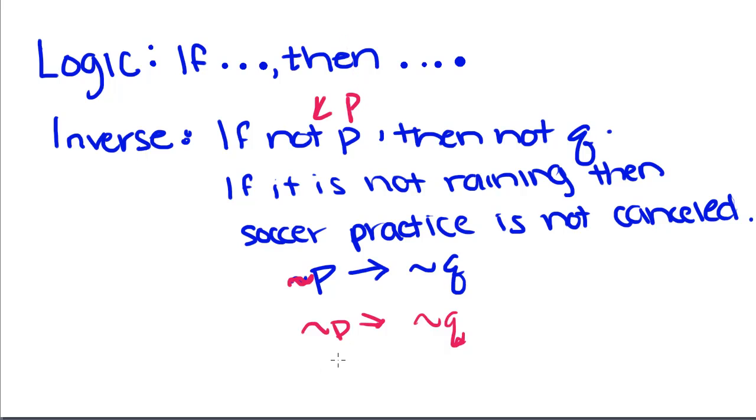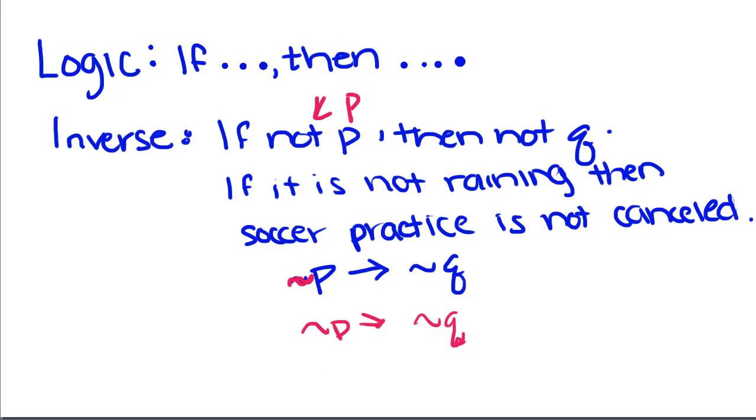The last one, and this is the only statement other than the conditional you're given that is always true, is if not Q then not P. The contrapositive is really just taking the converse and taking the inverse and doing it at the same time, because we're going to switch the order of the two actions and we're going to negate them with the not statements.